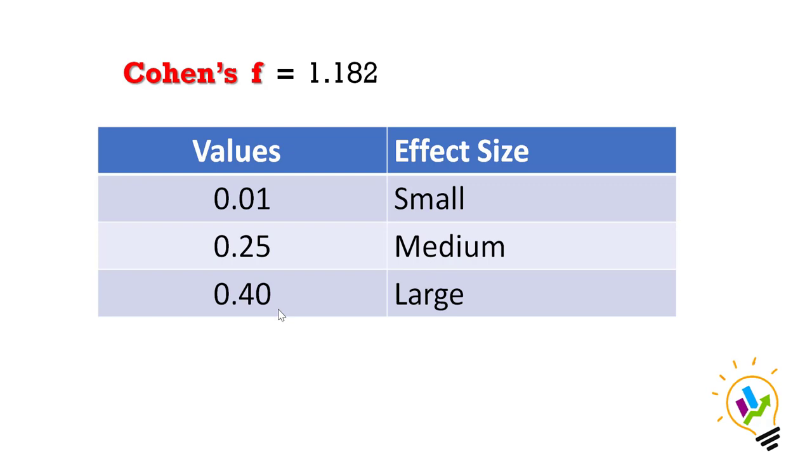Since the Cohen's f value here is 1.182, the effect size is large. This means the two independent variables' impact on the dependent variable is large effect because the Cohen's f value is 1.182.